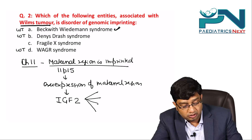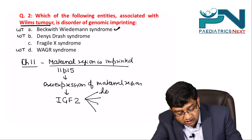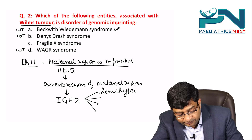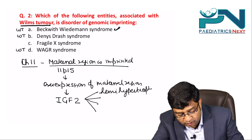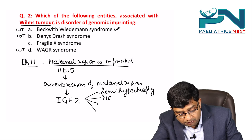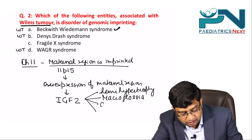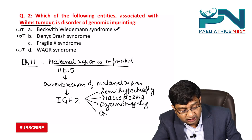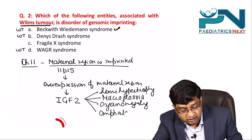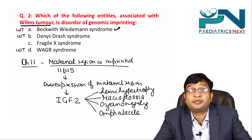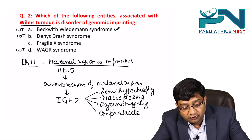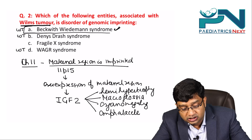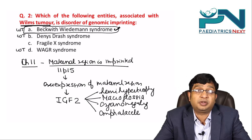Over-expression of IGF2 leads to increased growth, resulting in hemihypertrophy, macroglossia, and organomegaly. So out of the three syndromes, it is Beckwith-Wiedemann syndrome which is the disorder of genomic imprinting.